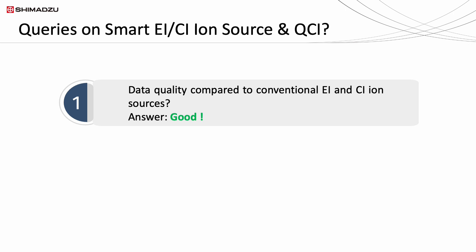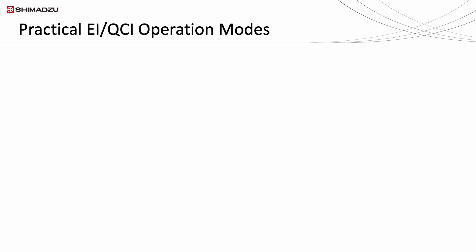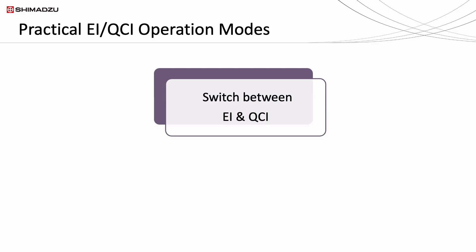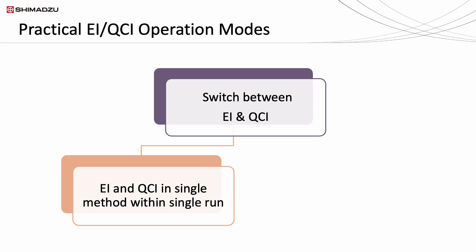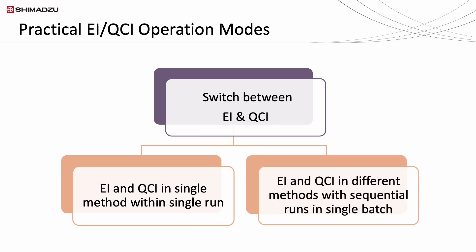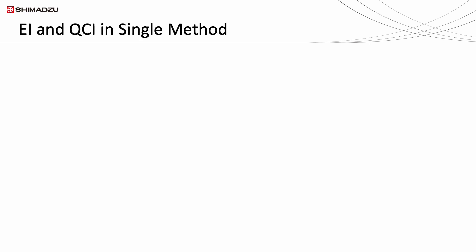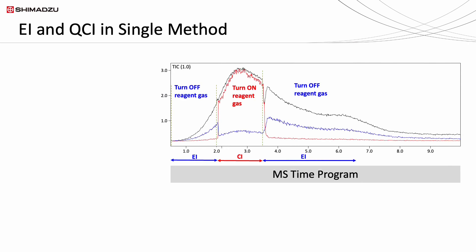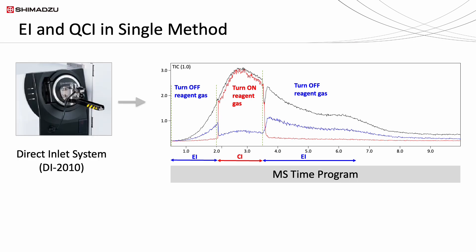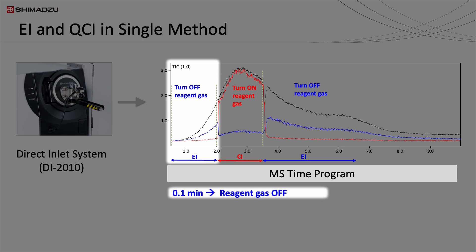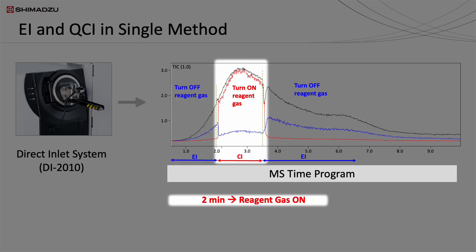Let us move on to the second query regarding the ease of operation. With smart IS installed in the system, EI and QCI data acquisition can be operated in several modes. The first mode is switching between EI and QCI data acquisition within a single method. Alternatively, the EI and QCI methods can be divided into different method files and run within a single batch. For EI and QCI data acquisition within a single method, broad peaks are ideal, which can be achieved by thermal desorption from the direct inlet probe DI2010. In this case, the mass spectrometer can be configured to switch off the reagent gas for EI and switch it on for CI in a single analysis.